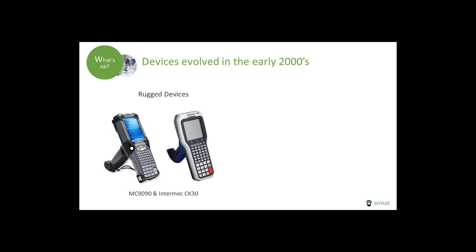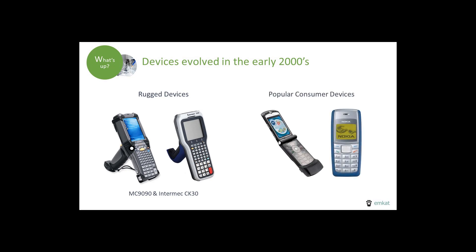In the early 2000s, the first devices running Pocket PC 2003 and Windows Mobile 5 appeared on the market. The MC9090 and CK30 were especially popular. This was a big change — all applications needed to be rewritten. After an initial panic, reactions were pretty positive as users began to take advantage of improved hardware and software. There's a good chance that if you had a phone around then, it was one of these, with the height of mobile apps being the snake game.